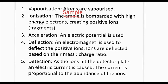Once deflected, the ions are then detected. The ions hit the detector plates and this causes an electric current, because an electric current is a flow of either electrons or ions. As the ions hit the detector plate, an electric current is generated, and the reading of that current is proportional to the abundance of the ions — the more ions, the higher the electrical current. This generates our mass spectra.